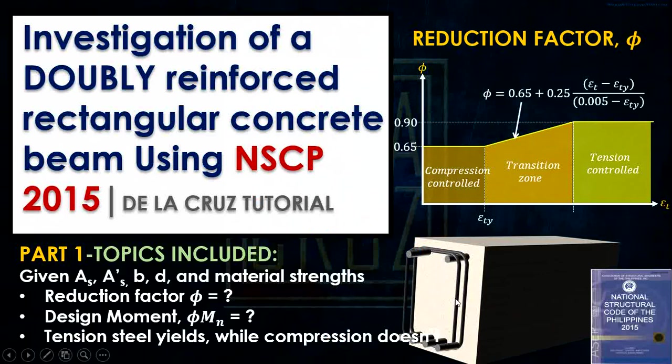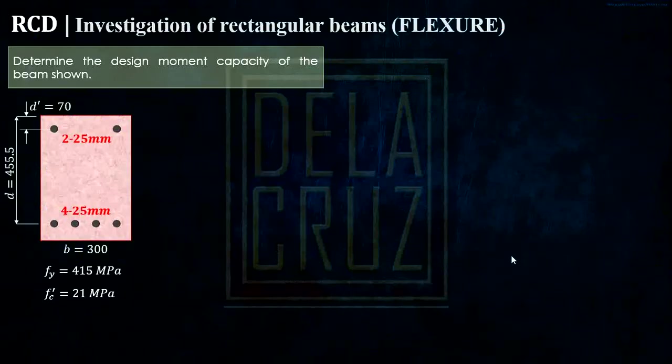In this video, we will learn how to calculate the design moment capacity of a doubly reinforced beam with respect to NSCP 2015. This is part 1 and the specific case here is the tension steel will yield while the compression steel doesn't yield. So without any further ado, let's start to solve a problem.